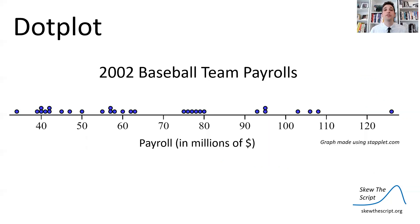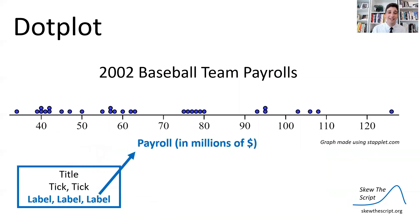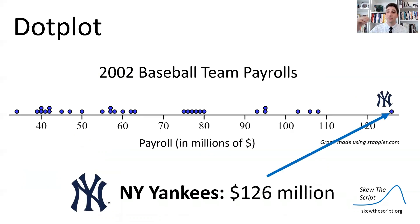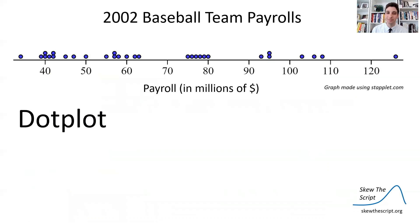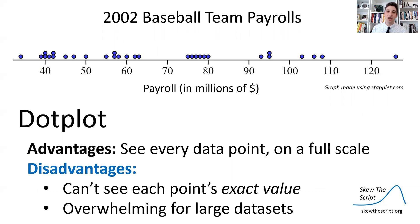Here are those team payrolls visualized on a dot plot. I've made sure to include a title, tick marks to show the scale, and a labeled x-axis — payroll in millions of dollars — so everyone knows what this graph is about. We have a dot representing the New York Yankees at $126 million, and two dots stacked on top of each other representing two teams who paid their players $40 million: the Oakland A's and the Minnesota Twins. A dot plot lets you see every data point on a full scale, but you can't see each point's exact value — you have to estimate from the scale — and it can be overwhelming for large data sets.